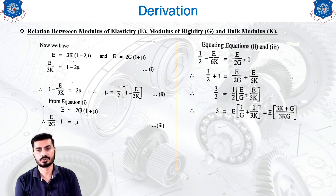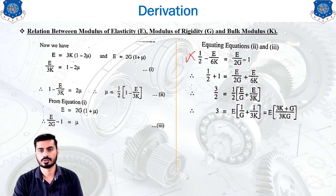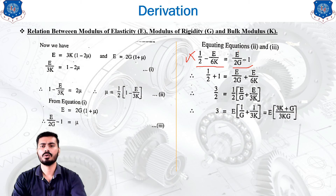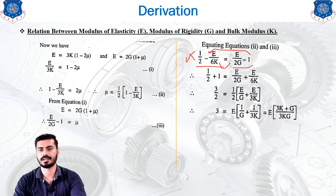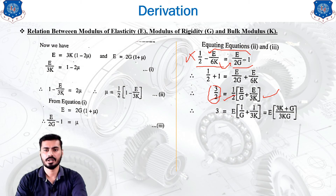Equating the two expressions for mu: 1/2 − E/(6K) = E/(2G) − 1. Rearranging by moving terms across: 1/2 + 1 = E/(2G) + E/(6K), which gives 3/2 = (1/2)(E/G + E/(3K)). Multiplying both sides by 2: 3 = E(1/G + 1/(3K)).